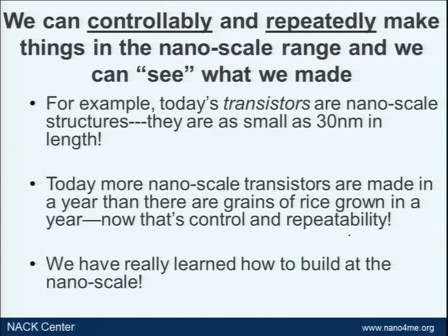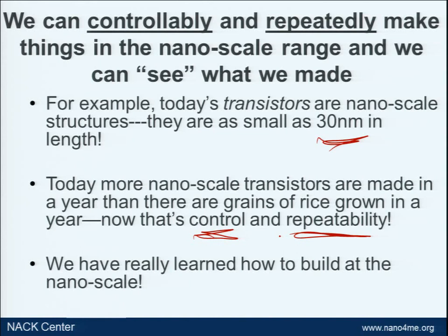To give you an idea of how controllably and repeatedly we can make things today, let's take a look at today's transistors. Transistors in production are as small as 30 nanometers in length — very, very small structures. We can make tremendous numbers of these. In fact, today more nanoscale transistors are made in a year than we humans grow grains of rice. We can really control and repeat manufacturing at the nanoscale, and we can see what we're doing. We've truly learned how to build at the nanoscale.